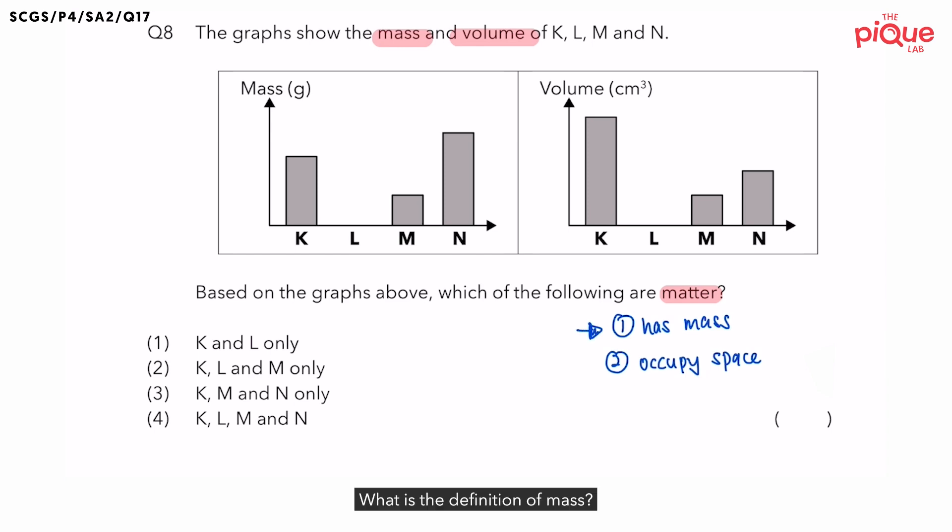What is the definition of mass? Mass is the amount of matter in an object. So since we are talking about mass, let's focus on the mass graph. How do we measure mass? We can use instruments such as the electronic balance or the lever balance to measure mass.